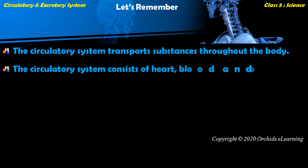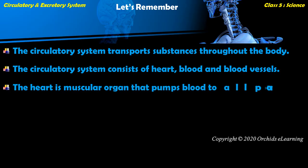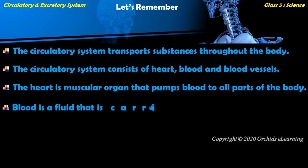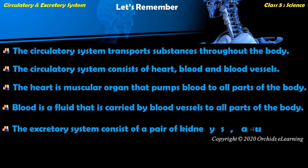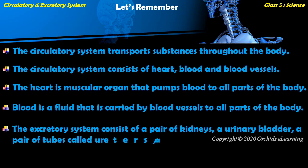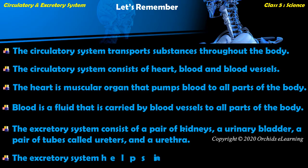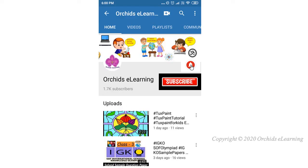Let's remember: the circulatory system consists of the heart, blood, and blood vessels. The heart is a muscular organ that pumps blood to all parts of the body. The excretory system consists of a pair of kidneys, a urinary bladder, a pair of tubes called ureters, and a urethra. The excretory system helps in the excretion of wastes from our body.